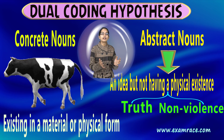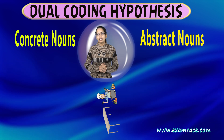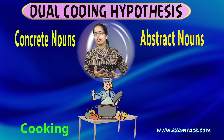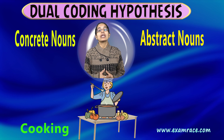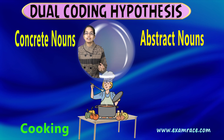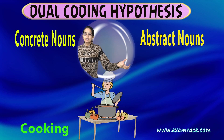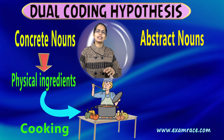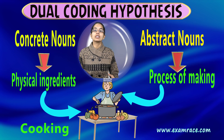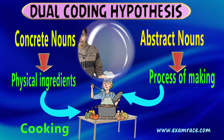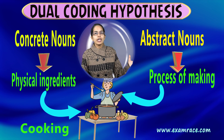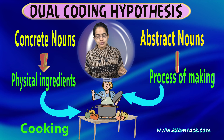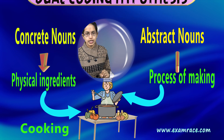On the other hand, there could be abstract concepts. An abstract concept could be a verbal or descriptive code — for example, speaking truth or being non-violent. These are abstract concepts that cannot be concrete in nature. When talking about mental models, we try to assimilate both the concrete images and the verbal descriptions together.